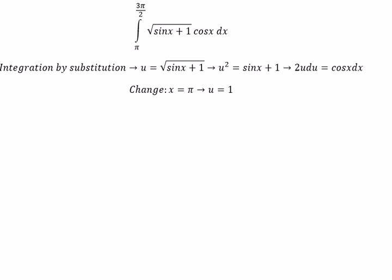Next, if x equals 3π over 2, then u equals 0.